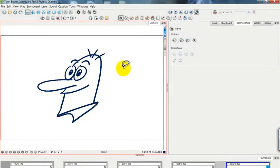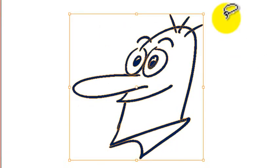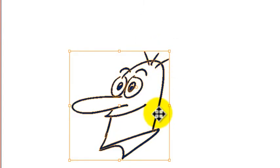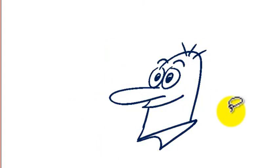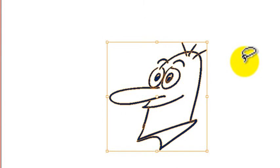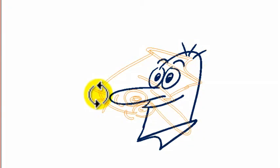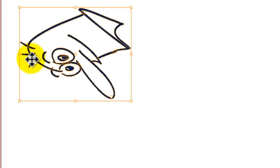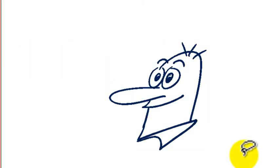I'd also like to demonstrate how to change the pivot point of rotation. First, I'll shrink the drawing by going to the scalable corner and holding the Shift key so it scales in perfect proportion. Now when I select the item, I can rotate it. But rather than rotating from the center, I'd like to move the pivot point so that it rotates from the nose, for example. Watch the difference — now it's rotating from the nose. Let me show you how I did that.